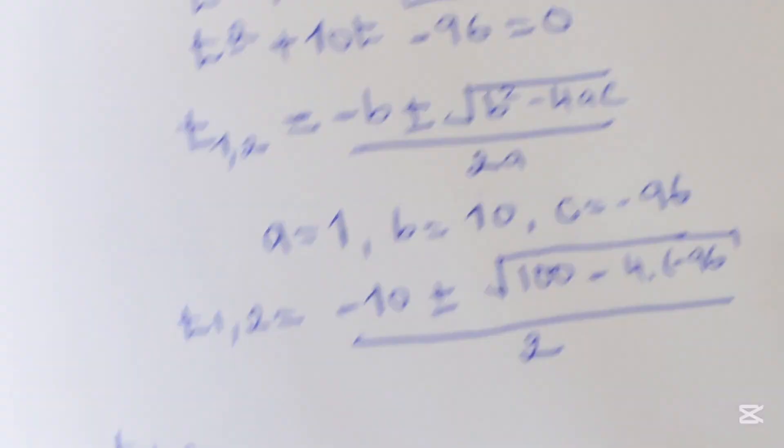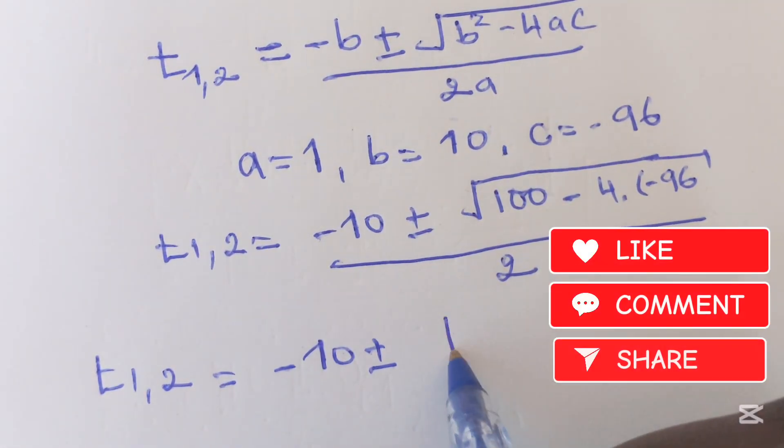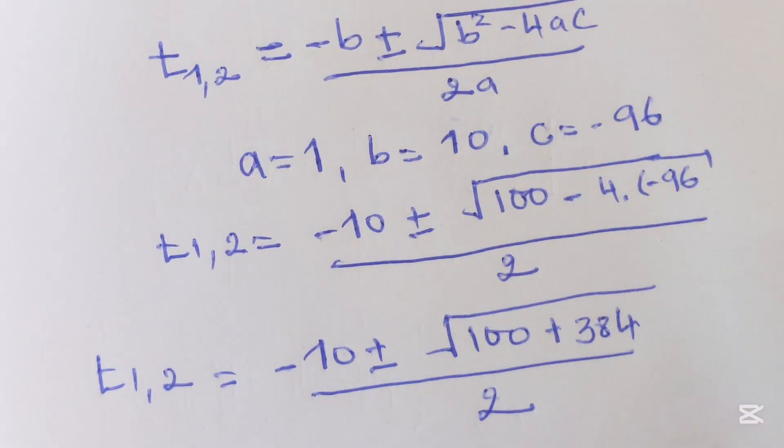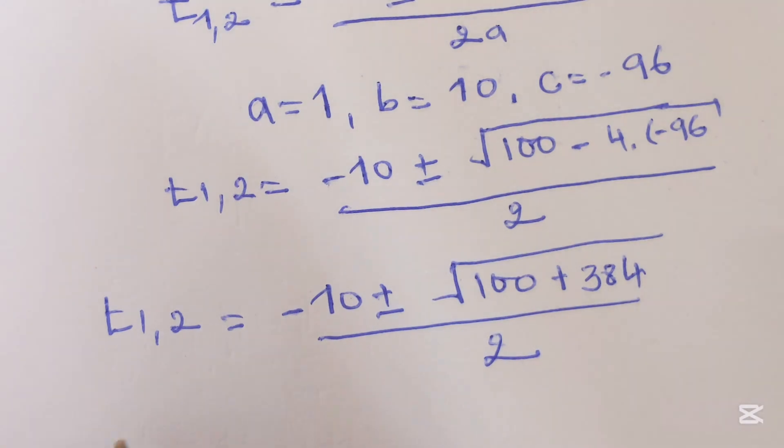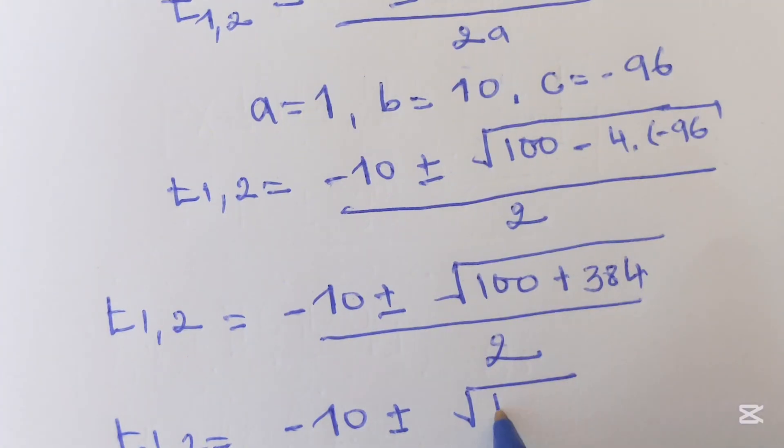T1 and 2 will be negative 10 plus or minus, here we shall get 100 then plus, here we get 384 over 2. Then, t1 and 2 will be negative 10 plus or minus square root of 484.